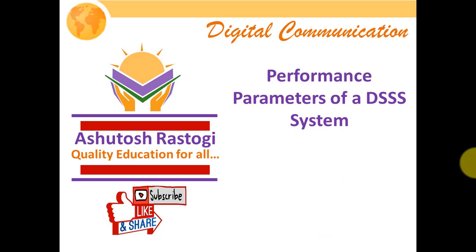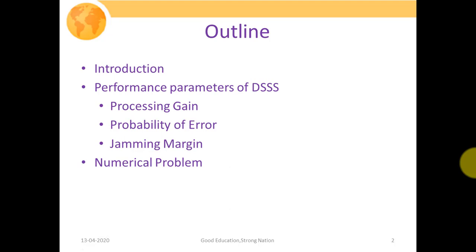Today in this particular lecture, we will discuss the performance parameters of direct sequence spread spectrum systems. These are the outlines: we will start with the introduction, then discuss performance parameters such as processing gain, probability of error, and jamming margin — their basic definitions. Then we will discuss a numerical problem to evaluate all those performance parameters and get a better understanding of direct sequence spread spectrum systems.